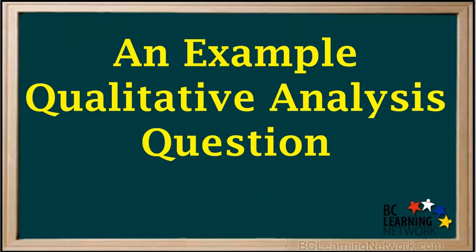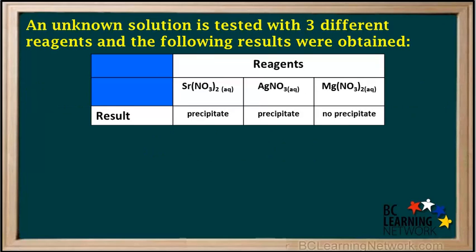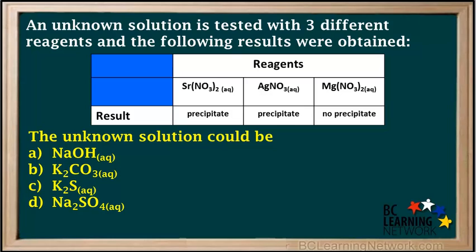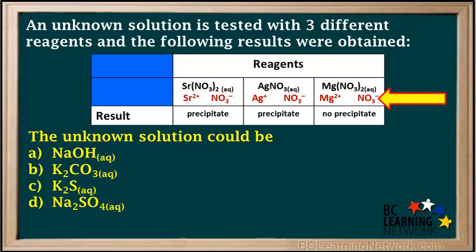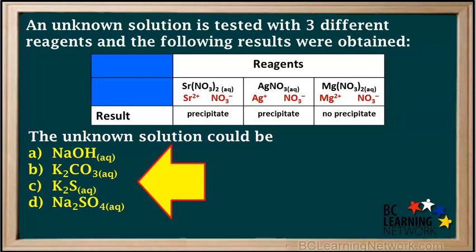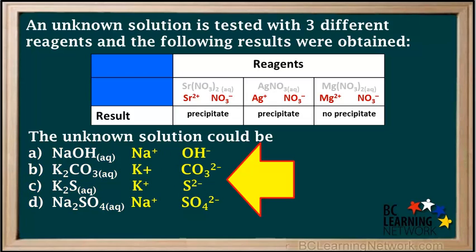Let's do an example question dealing with qualitative analysis. An unknown solution is tested with three different reagents, and the results are shown in the table. We have to choose the correct answer from the list. The first thing we do is dissociate or break up all of the reagent compounds into their individual ions. We won't worry about the number of each kind, just the ions. We also dissociate the ions in the possible answers.